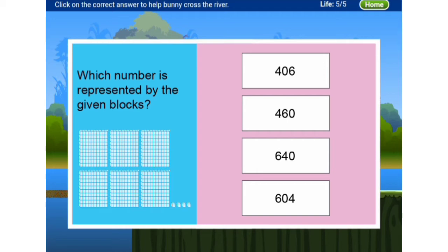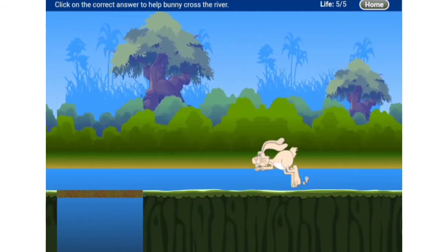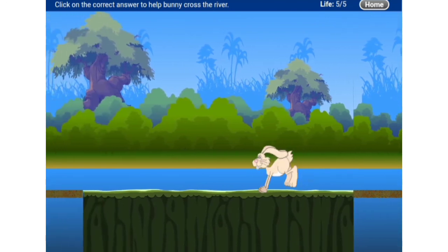Which number is represented by the given blocks? We know the blocks — ones box means small boxes, tens means ten small boxes, and hundreds means ten tens. Here they are showing hundreds boxes and ones boxes. In the ones box there are four. In the hundreds place there are six. There is no tens box, so tens is zero. So the number is 604. The rabbit crossed the bridge!